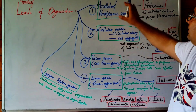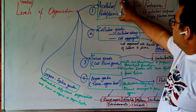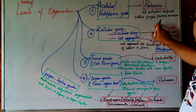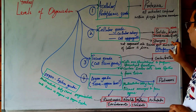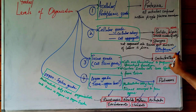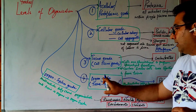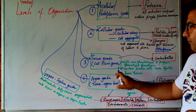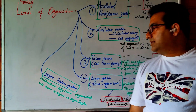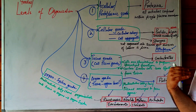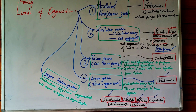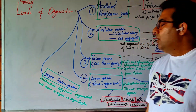To summarize the grades: the acellular or protoplasmic grade is seen in protozoa; the cellular grade is seen in protists, algae, and sponges (Porifera); the tissue grade is seen in cnidarians; the organ or tissue-organ level is seen in flatworms; and the organ system grade is seen in roundworms, annelids, mollusks, arthropods, echinoderms, and chordates.